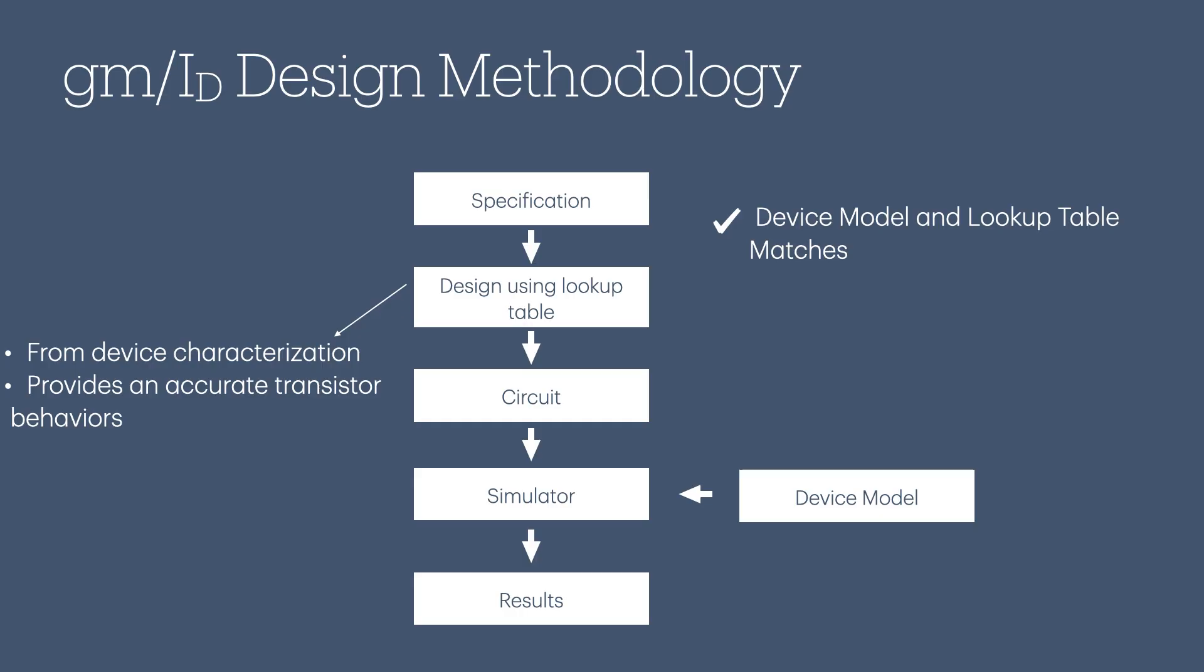Also, all the inversion levels - moderate, weak, and strong - are captured in the lookup table.